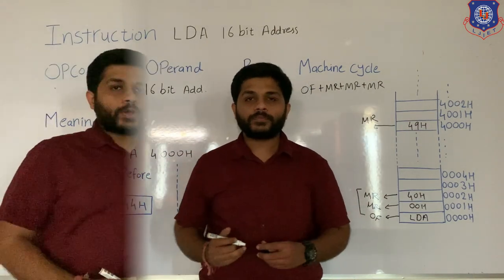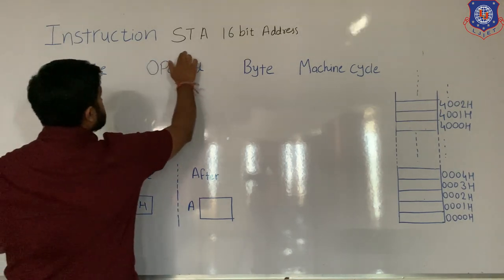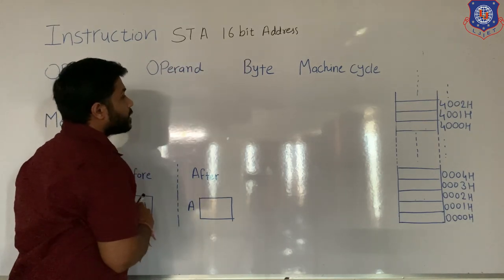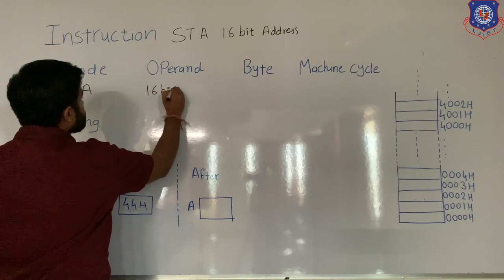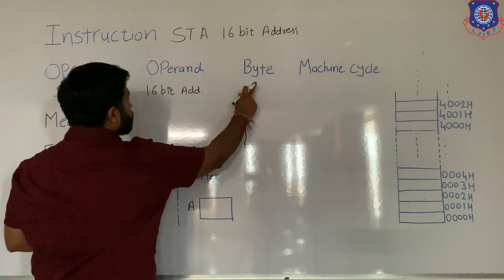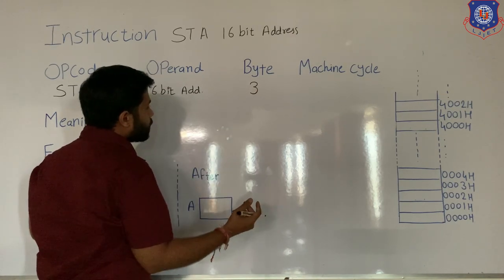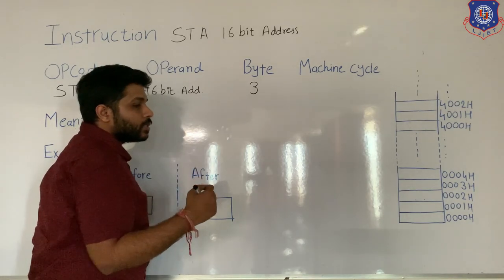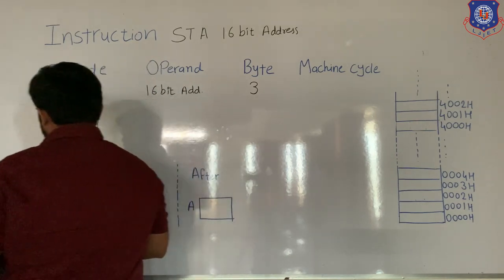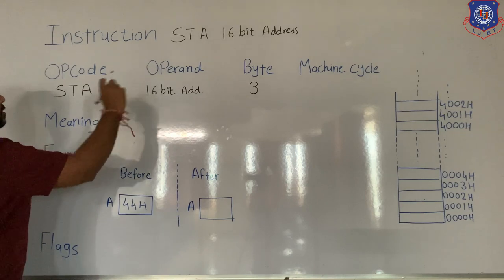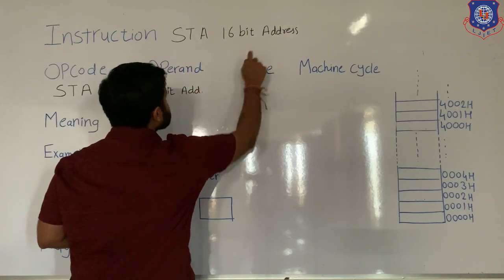Now let's see the STA 16-bit address instruction. For this instruction, the first part is STA (opcode) and the remaining part is the 16-bit address (operand). Since this instruction contains a 16-bit value, it is a 3-byte instruction, meaning it will occupy 3 memory locations. STA 16-bit address means store data from accumulator to 16-bit address of memory location.